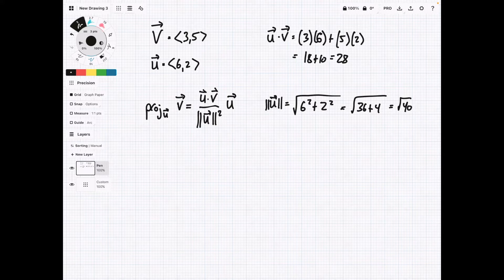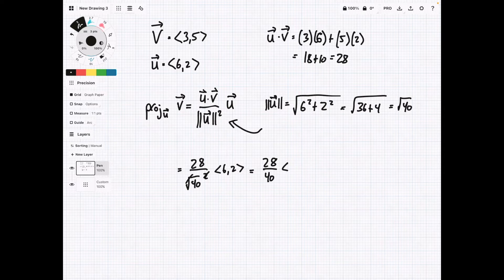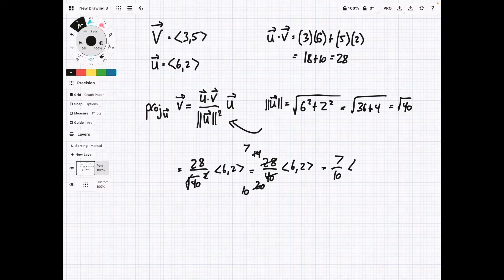Okay, now we have our two values that we need, and now we can plug them into this formula. So it's going to equal 28, which is u dot v, over square root of 40 squared times 6 comma 2. So again, the square and the square root cancel, leaving us with 28 over 40 times 6, 2. Pull a 2 out of here, that's 14, this becomes 20. And then another 2, this becomes 7, this becomes 10.